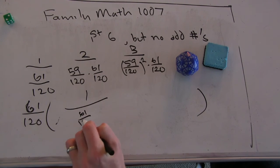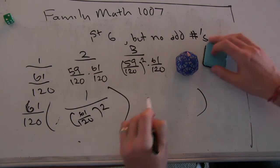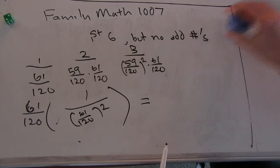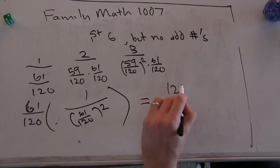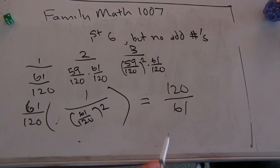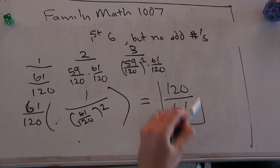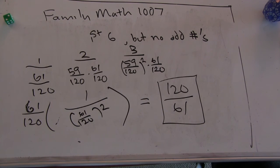61 over 120. So it would be 120 over 61. That's 120 over 61, which is nearly equal to the half. It's nearly equal to 2. Oh, yeah, 2.